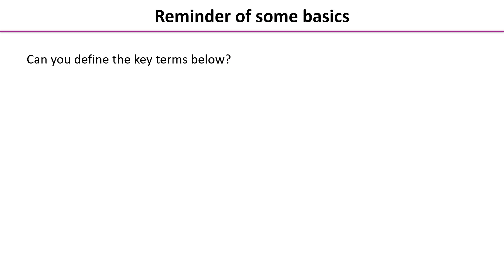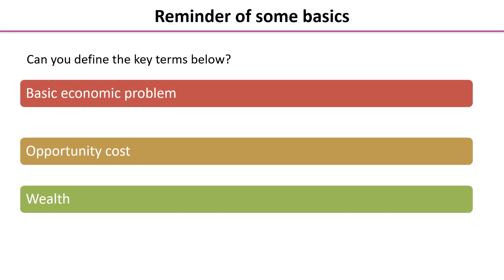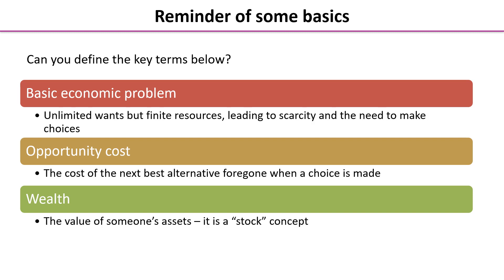A reminder of some of the basics. Can you define the key terms below? Pause the video, define the key terms and join me in a moment. So the basic economic problem: unlimited wants but finite resources, leading to scarcity and the need to make choices. It's well worth revisiting the basic economic problem very frequently because that's what we're trying to solve throughout the whole of our A-level. Opportunity cost: the cost of the next best alternative forgone when any choice is made. And wealth: the value of someone's assets. It's a stock concept as opposed to a flow concept.